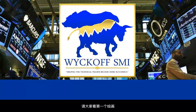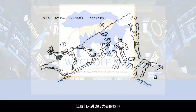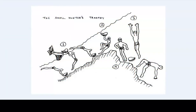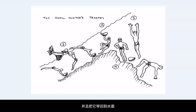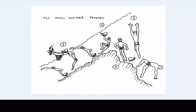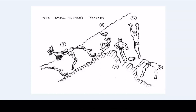Please examine drawing No. 1 as we tell the Shell Hunter's story. A diver would go out to collect shells, and he would dive down and pick up a shell and bring it back up to the surface. He would put it in his basket, which is shown at point 1. He would then dive down and retrieve another shell, and continue to do this until something unexpected happened.